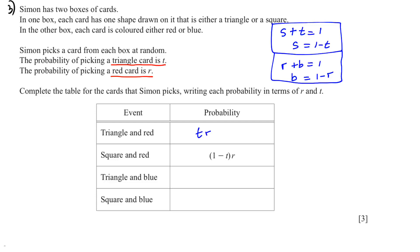And triangle and blue will be t(1 minus r). And square and blue will be (1 minus t)(1 minus r).